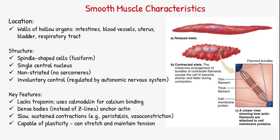Smooth muscle is different. It's found in places like your gut, bladder, and blood vessels. These cells are spindle-shaped and have one nucleus. They're involuntary and non-striated. Instead of troponin, they use calmodulin to respond to calcium. And thanks to dense bodies and plasticity, they contract slowly but effectively, even under stretch.